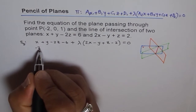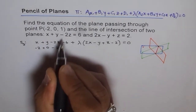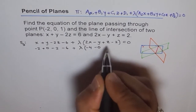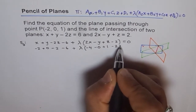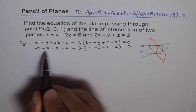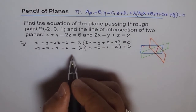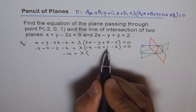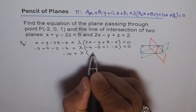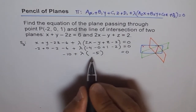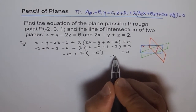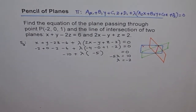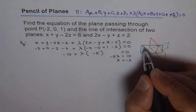Substituting x = −2, y = 0, z = 1: we get (−2 + 0 − 2 − 6) plus lambda times (2×(−2) − 0 + 1 − 2) equals 0. That gives −10 plus lambda times (−4 + 1 − 2) = −10 plus lambda times (−5) = 0. So −5λ = 10, which gives lambda equals −2.